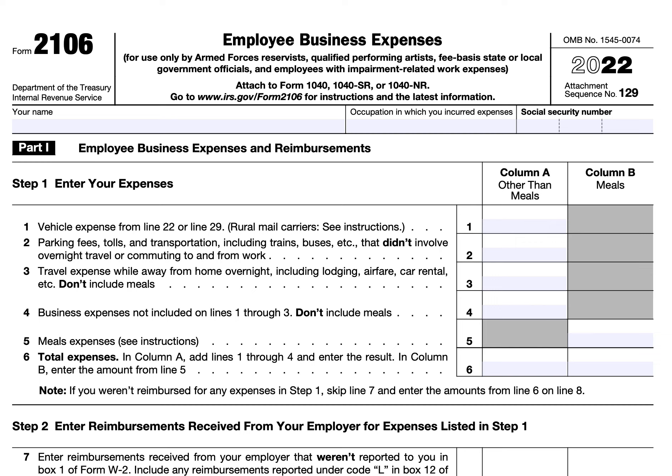Before we begin with Form 2106 - Employee Business Expenses, a couple of things to clarify. Only certain employees may file this form under current tax law. If you are not an Armed Forces reservist, a qualified performing artist, a fee-basis state or local government official, or an employee with impairment-related work expenses, you are not eligible to deduct employee business expenses on your income tax return.